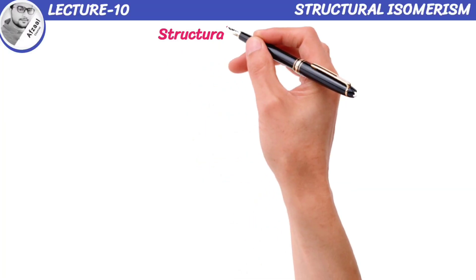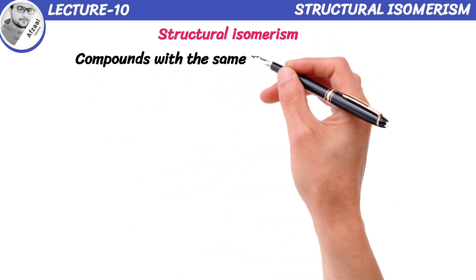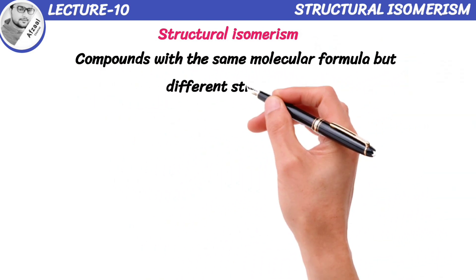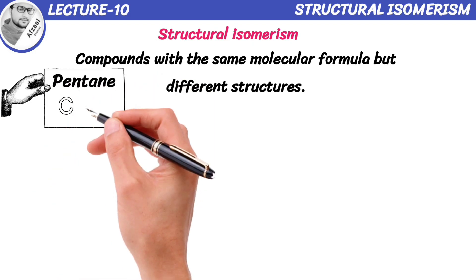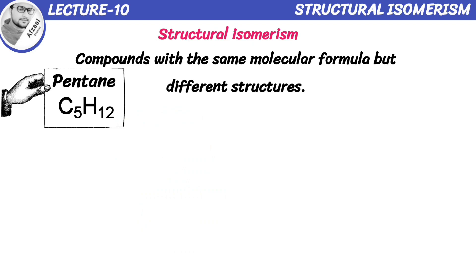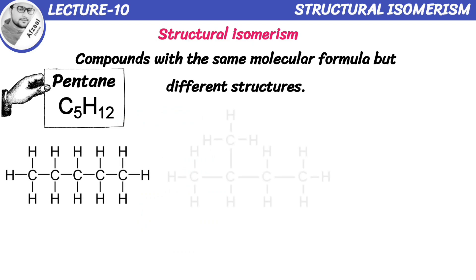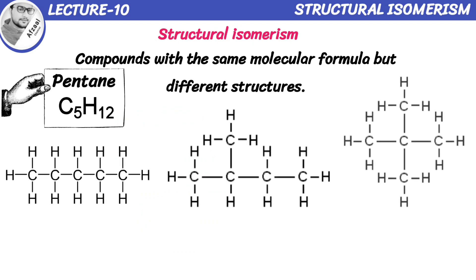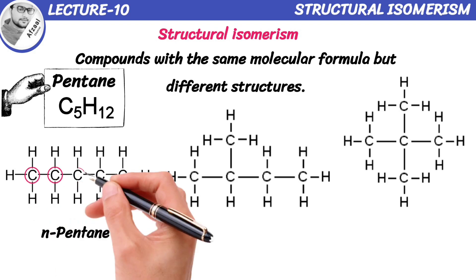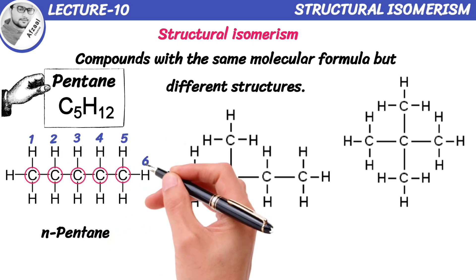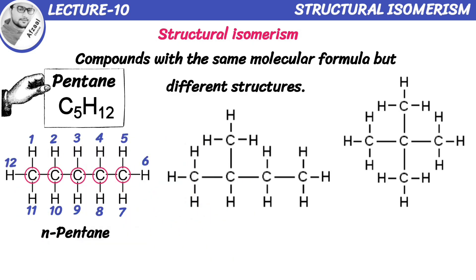Let me define structural isomerism. Compounds having the same molecular formula but different structures are called structural isomers. I have an example of pentane. It has the molecular formula C5H12, but there's not just one way to arrange those atoms. Let's start with the first isomer called N-pentane, which stands for normal pentane. It's the simplest and most straightforward arrangement — a straight chain of 5 carbon atoms with 12 hydrogen atoms. So, the molecular formula of this structure is C5H12.